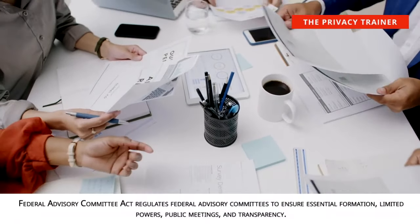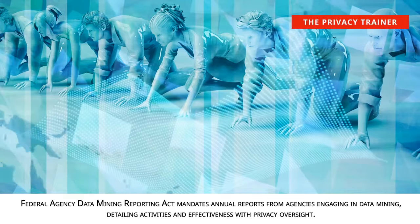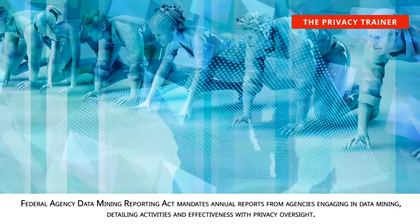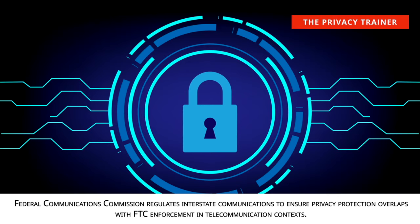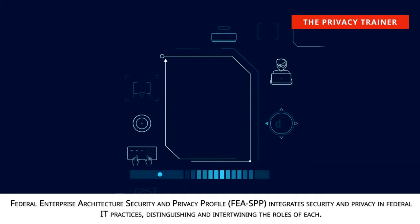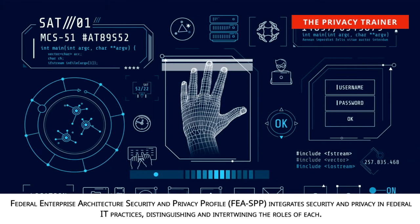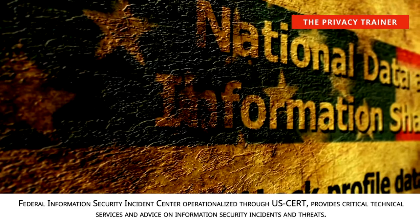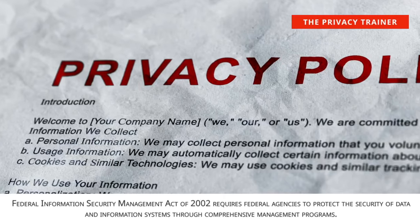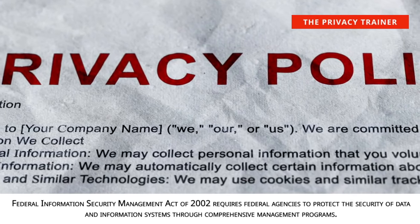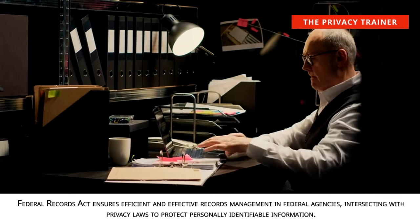Federal Advisory Committee Act. Regulates federal advisory committees to ensure essential formation, limited powers, public meetings, and transparency. Federal Agency Data Mining Reporting Act. Mandates annual reports from agencies engaging in data mining, detailing activities and effectiveness with privacy oversight. Federal Communications Commission. Regulates interstate communications to ensure privacy protection overlaps with FTC enforcement in telecommunication contexts. Federal Enterprise Architecture Security and Privacy Profile, FAR SPP. Integrates security and privacy in federal IT practices, distinguishing and intertwining the roles of each. Federal Information Security Management Act of 2002. Requires federal agencies to protect the security of data and information systems through comprehensive management programs.